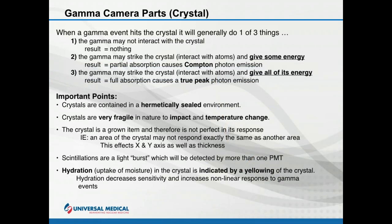When a gamma ray strikes a crystal it can do one of three things: it may pass right through with no interaction and no scintillation; it may interact and give off only some energy, producing a partial absorption and contributing to the Compton peak; or it may interact with atoms and give all of its energy to the crystal, creating a true energy response — a true scintillation — which gives us a true photo peak for emissions.